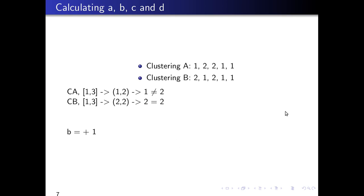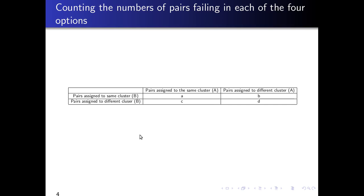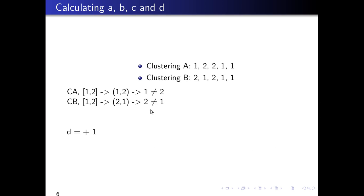Now index one and three. The index (1, 3) corresponds in cluster A to the pair (1, 2), which is different. In cluster B it corresponds to the pair (2, 2), which is equal. So B increases by one. B is defined as: the pairs are assigned to different clusters in A but the same cluster in B — and that is the case here.